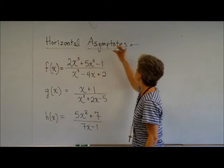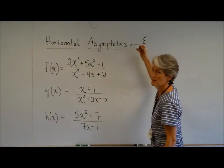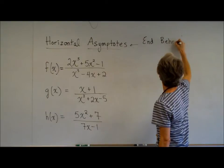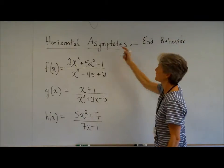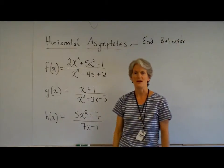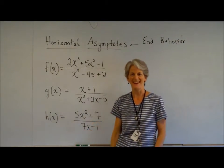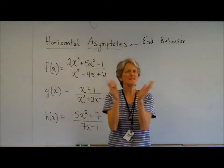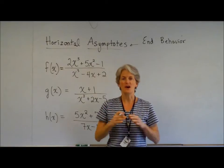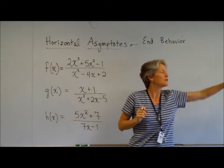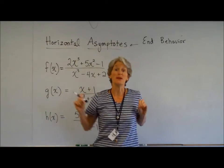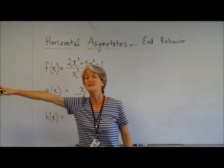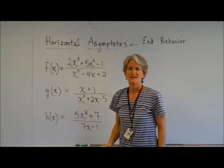This is really just a new term for end behavior. It just sounds fancier talking about horizontal asymptotes. Horizontal asymptotes don't tell us anything about what's happening to the function around all the juicy bits. They really tell us what's happening as X is getting really, really big — approaching infinity — or as X is approaching negative infinity.